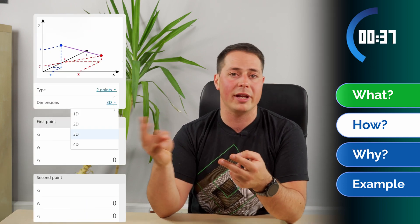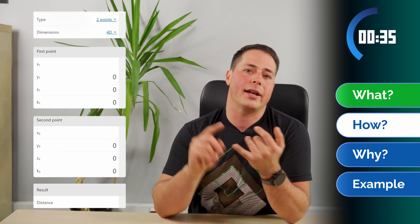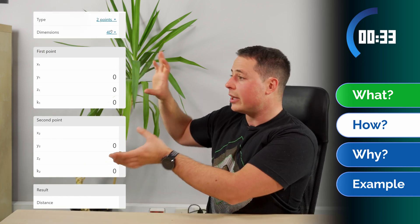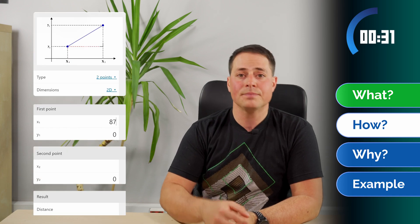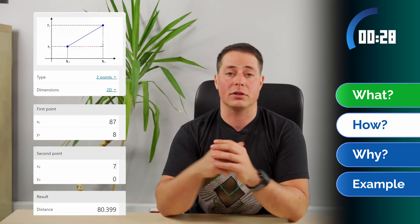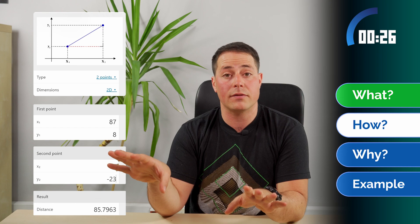For example, for two dimensions we have x and y, for three we add a z, for four we add a k. And once we fill in all the information about each point, we can move on to look at the result, because the calculator does everything else for us.